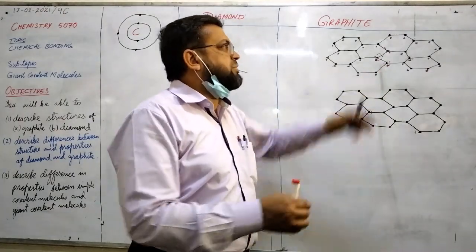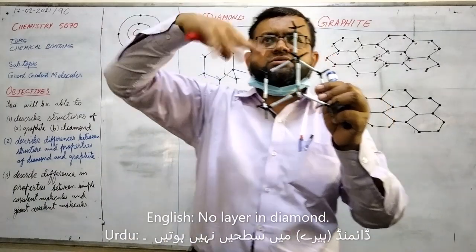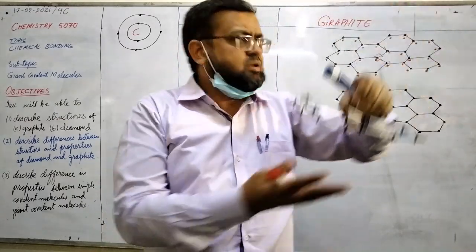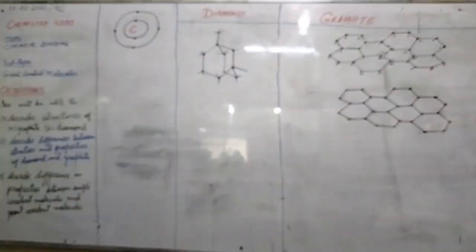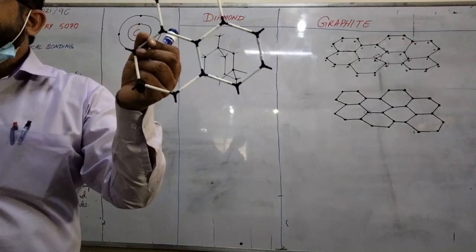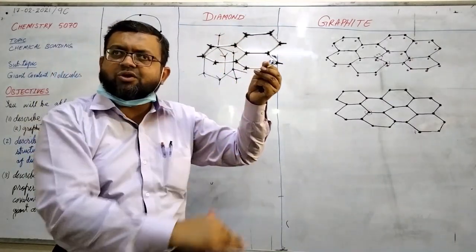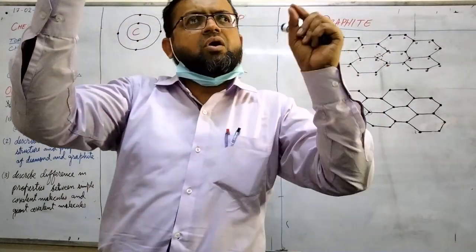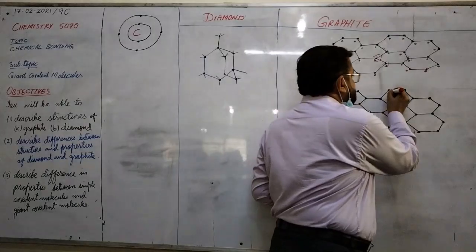Remember that diamonds are continuous, unlimited giant covalent molecules. But graphite consists of multiple layers. I have made only one layer, but there might be several layers. A single graphite molecule consists of several layers of this pattern. You can see it is a hexagon. Hexagonal pattern, multiple hexagons. And in every layer, all the carbon atoms have one free electron.